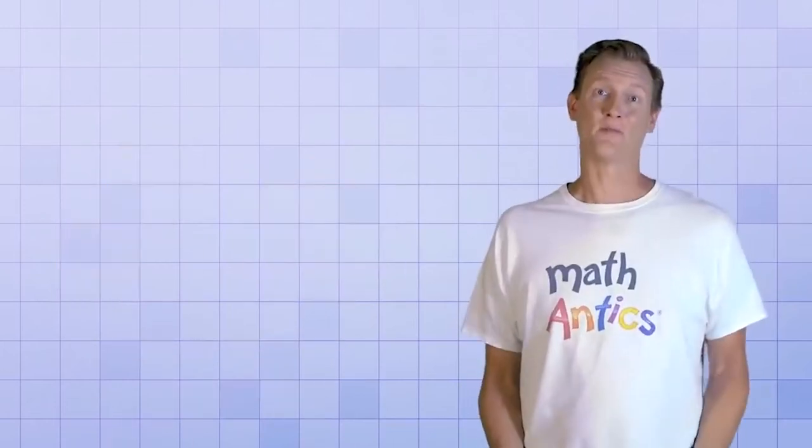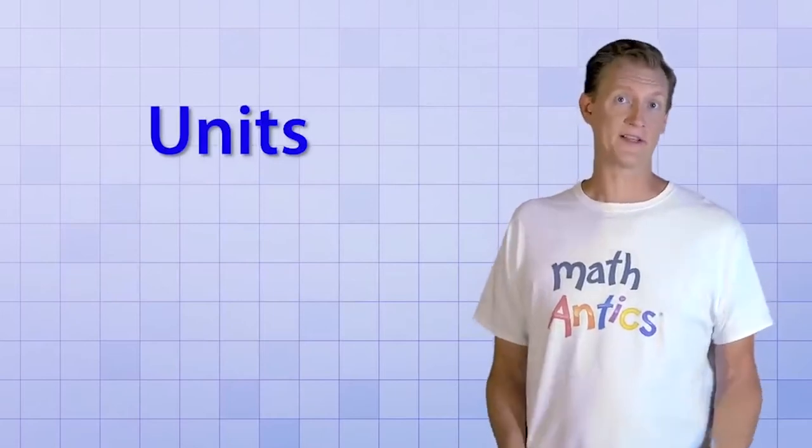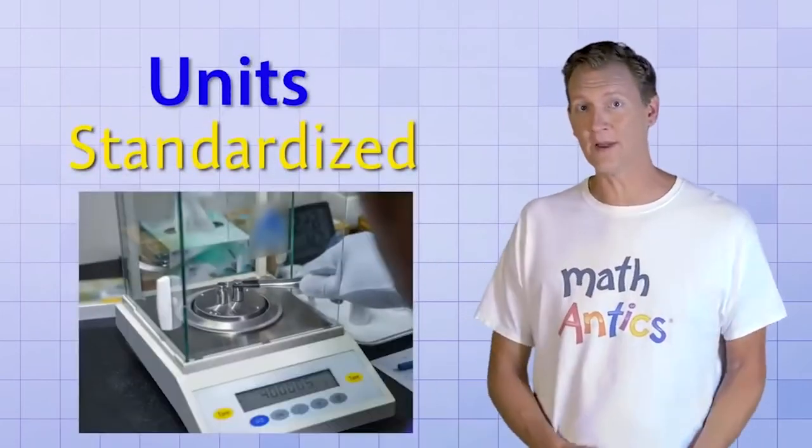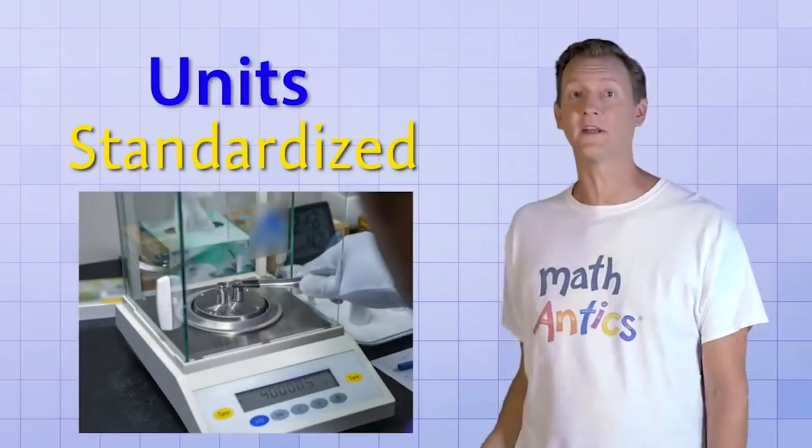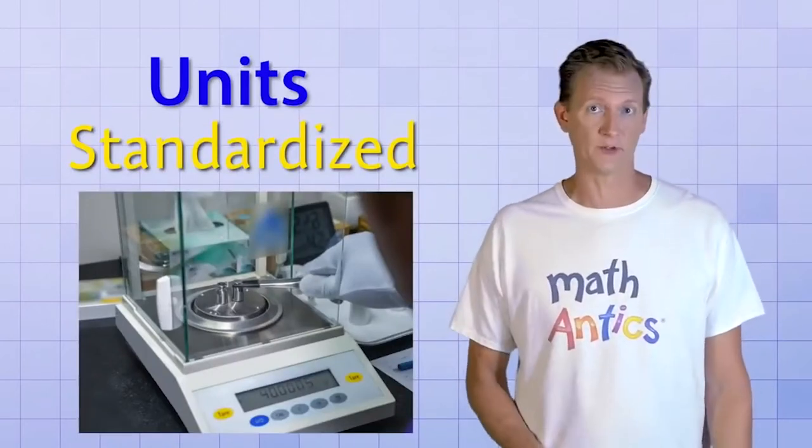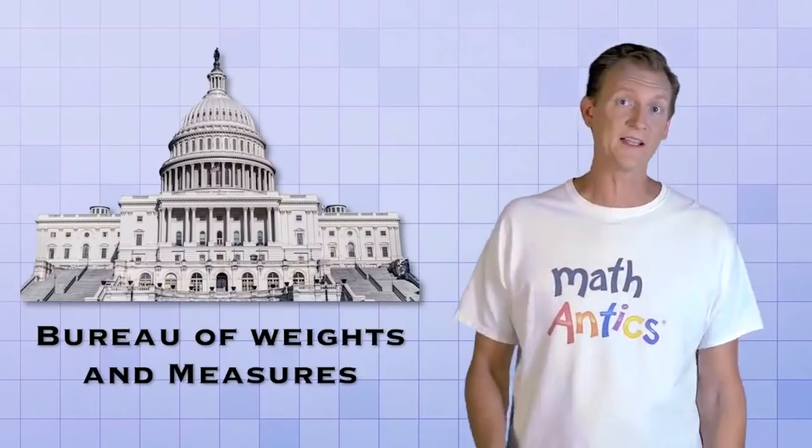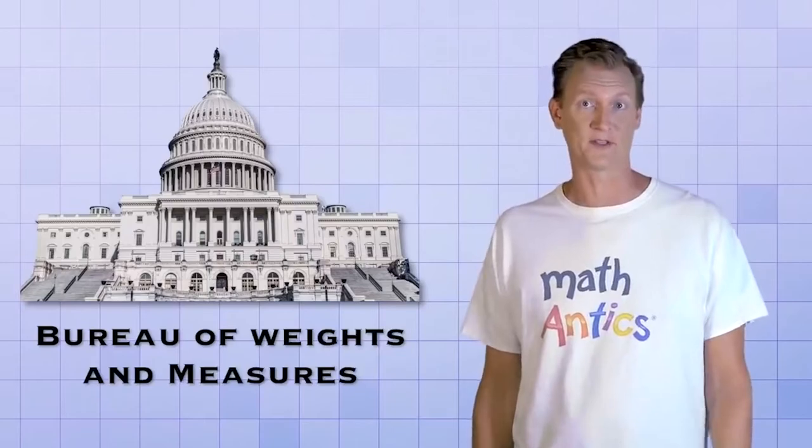To get around this problem, the units that we use in math and science are standardized, which means that they match official standard amounts that can be measured over and over again to give exactly the same result. There's even a government agency called the Bureau of Weights and Measures that defines and maintains those standard amounts.